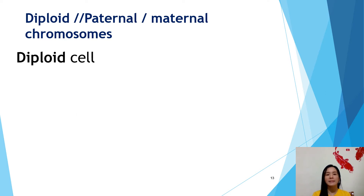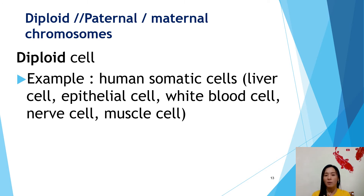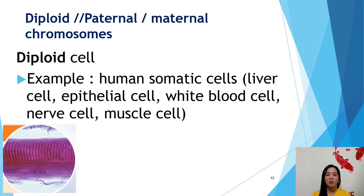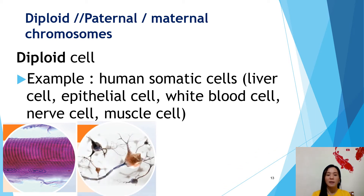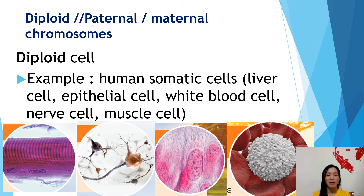What are the examples of diploid cells? For example, human somatic cells — the liver cell, epithelial cell, white blood cell, nerve cell, and the muscle cell are all diploid cells. That means inside the nucleus of these cells they have two sets of chromosomes. You can see this picture showing human skeletal muscle cell, nerve cell, epithelial cell, and white blood cell — they are all diploid cells.